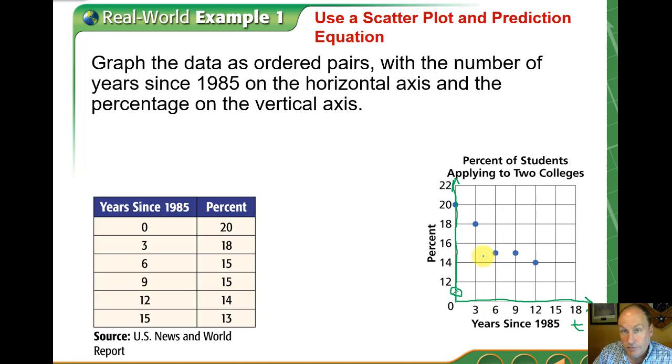9 comma 15, 12 comma 14, and finally 15 comma 13. Now the more data points you have, the better you're going to be able to make a case for the strength of your correlation.